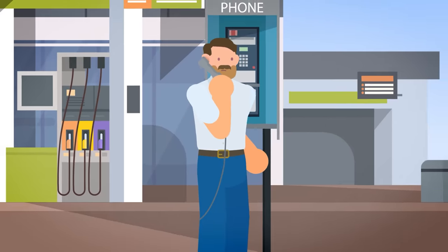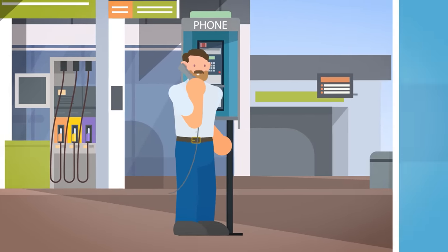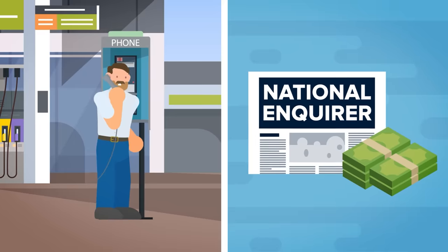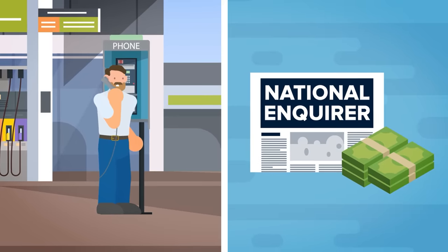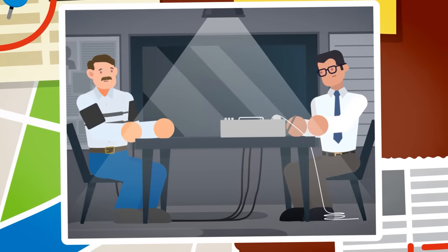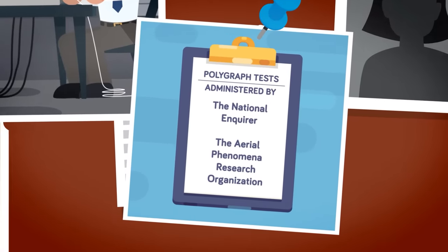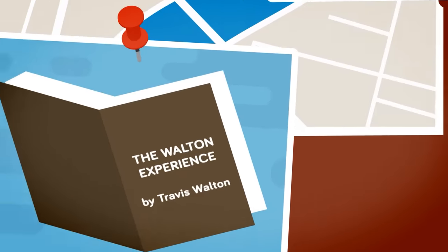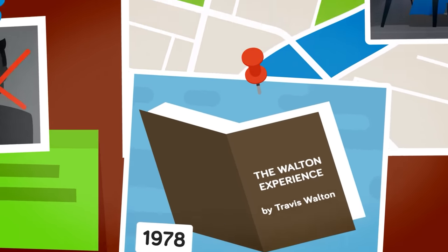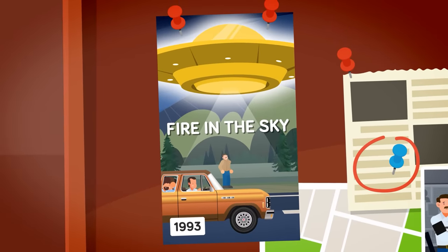And that was Travis Walton's story, according to him, the tale that the National Enquirer would pay him and his co-workers $5,000 for, for best UFO case of the year. As a condition of his award, he was asked to participate in polygraph tests administered by the Enquirer and the Aerial Phenomena Research Organization. In 1978, Travis Walton wrote about his story in a book titled The Walton Experience. In 1993, the book was adapted into the feature film Fire in the Sky. In order to promote the film, Travis's book was re-released under the title Fire in the Sky – The Walton Experience.